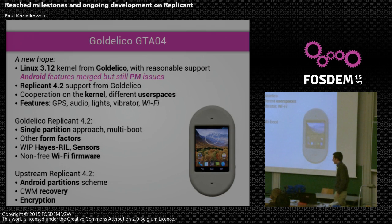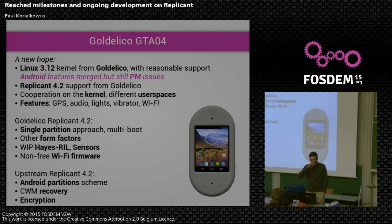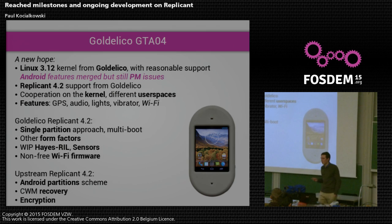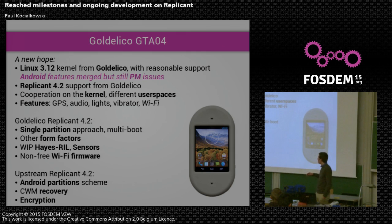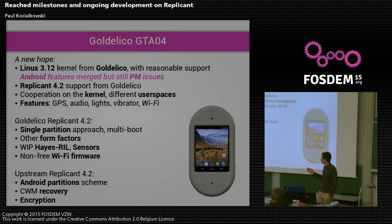Thankfully, Golden Delicious came up with a Linux 3.12 kernel that has decent support, on which it was easy to merge the Android features and on which power management is kind of working — there are still issues, but it's better. So at this point I started working on Replicant support again. That's why on the timeline I showed previously, the GTA04 support was back.